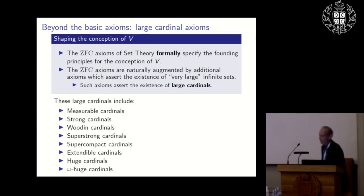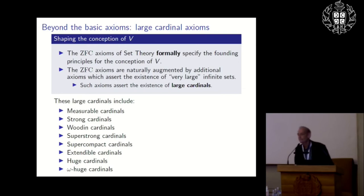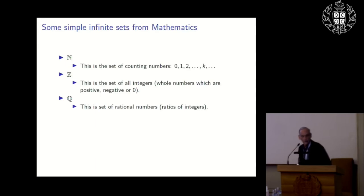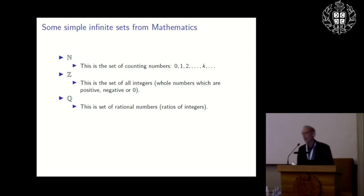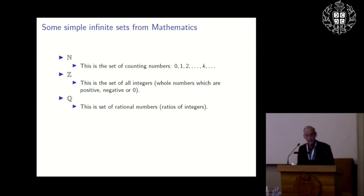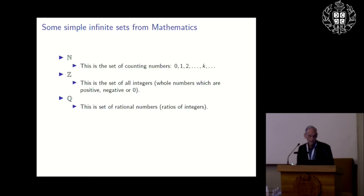Here are some of the large cardinals of modern interest. Some simple sets from mathematics: the set of all counting numbers is in some sense the simplest infinite set; then the integers, all positive and negative counting numbers; then the rationals; then the real numbers; and the plane, all points in the plane. These are five infinite sets you encounter in school.